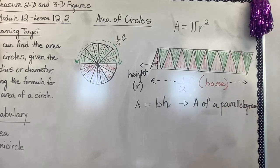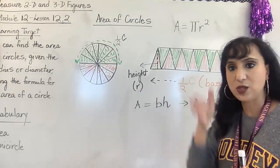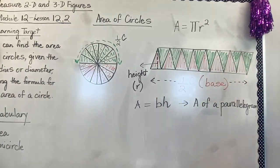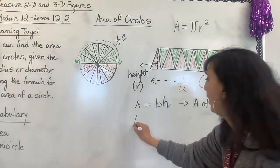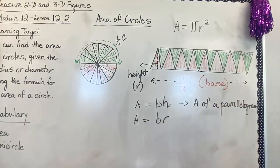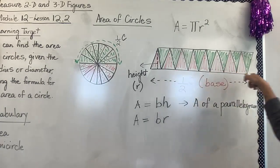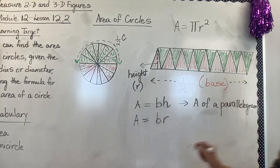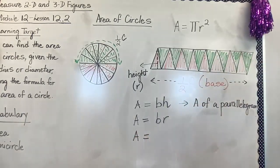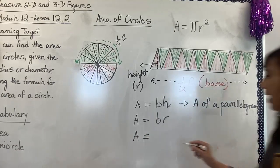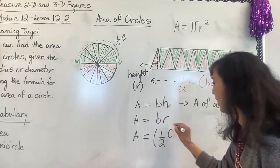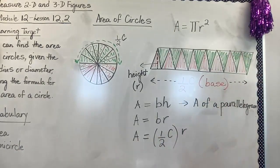Now we are going to replace the h with r, because that is what I'm calling as my height. So we are going to say area is equal to base times r. And then we know what is the base over here — this is going to be half c, because b is half c, which is the base — half the circle. So therefore area is equal to half c times r.